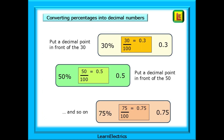Converting percentages into decimal numbers is very easy. For any percentage of 99% or less, just put a decimal point in front of the percentage. For example, put a decimal point in front of 30 to get 0.3, or put a decimal point in front of 50 to get 0.5, and so on. Do this a few times and you will forever remember it.